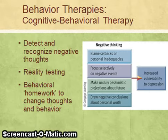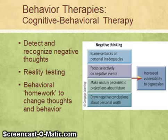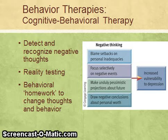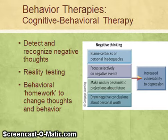CBT is typically done through a process of talking about the client's thoughts and having them write down their thoughts about different situations. The therapist and client then work to detect any negative or unrealistic thoughts. Those thoughts are subjected to reality testing, designed to produce a more realistic and neutral view versus the negative view. For example, if someone frequently says to themselves during a stressful situation, 'I'm such an idiot, I can't do anything right,' they are likely to experience feelings of anxiety and depression.